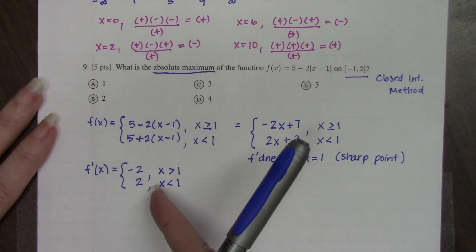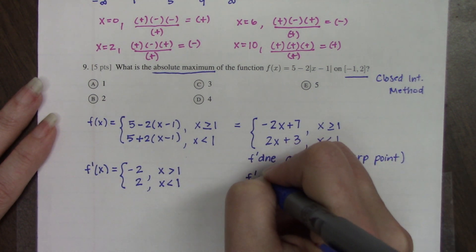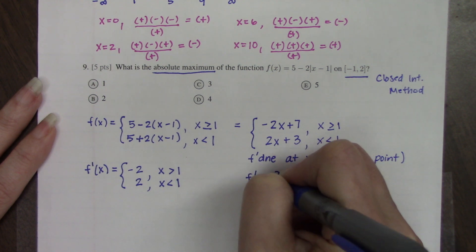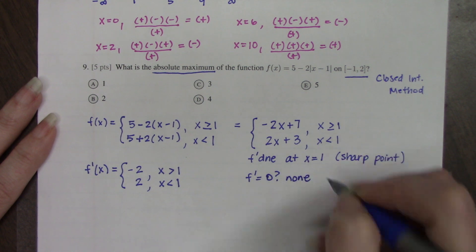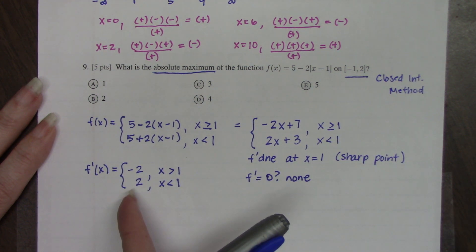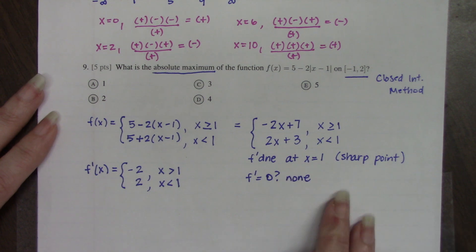So this is what the derivative would look like. Now if we want to look at are there anywhere that the derivative equals 0, the answer is going to be none because -2 can never be 0 and 2 can never be 0. So we only have one critical value.